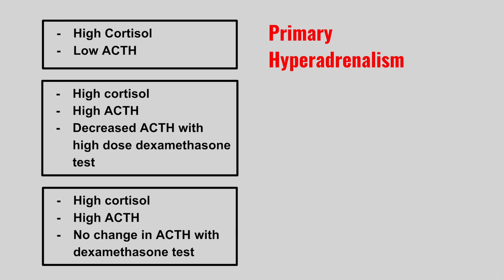The next patient has high cortisol, high ACTH, and it decreases with a high-dose dexamethasone suppression test. This is a pituitary adenoma, also called secondary hyperadrenalism or Cushing's disease.